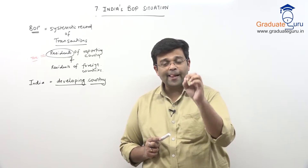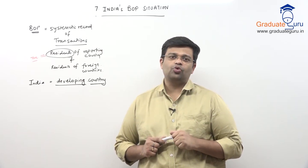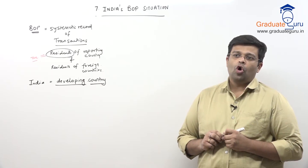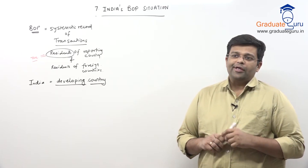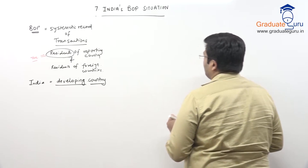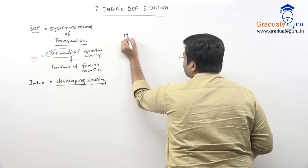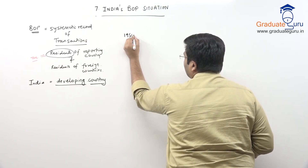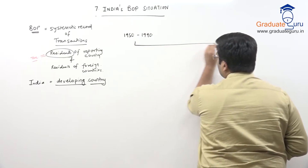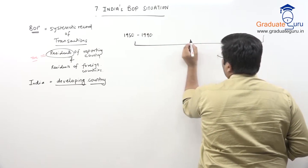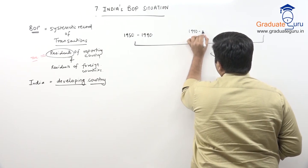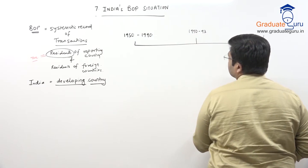In this particular chapter and in these videos, we will specifically talk about India's balance of payments situation. To understand this situation, I will create a timeline. In that timeline, we will discuss: Phase 1 — post-independence, probably 1950 to 1990, and Phase 2 — 1990 to 1993.